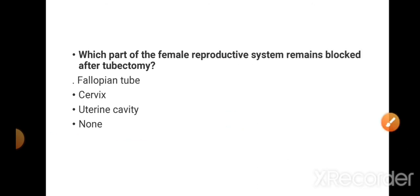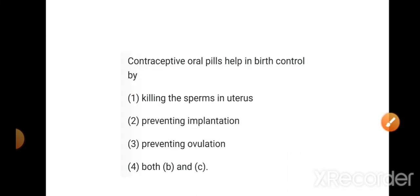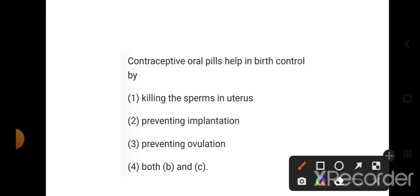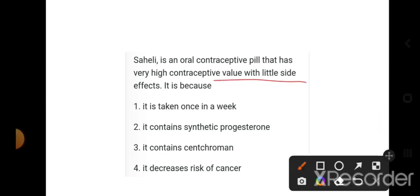Which part of the female reproductive system remains blocked after tubectomy? The right option is the fallopian tube. Contraceptive oral pills help in birth control by killing the sperm in uterus, preventing implantation, or preventing ovulation. The right option is both B and C. Both these options are correct here. Saheli is an oral contraceptive pill that has very high contraceptive value with little side effect. It is because it contains centchroman. This is the right answer.